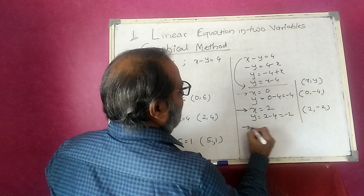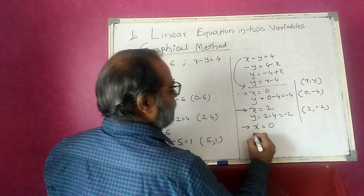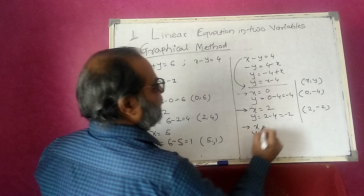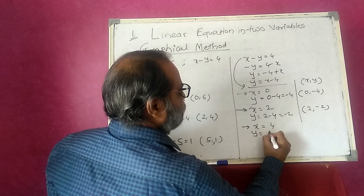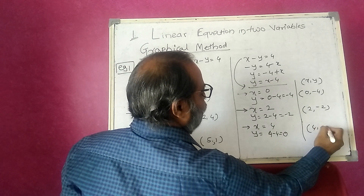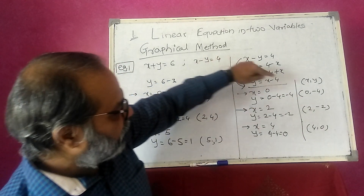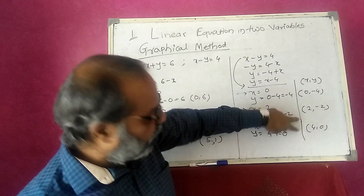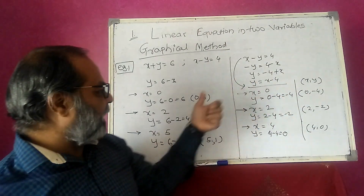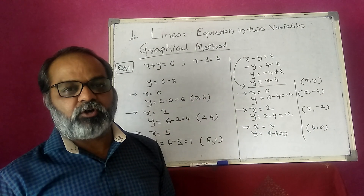I take x is equal to 4. That means y is equal to 4 minus 4, that becomes 0. My coordinate becomes (4, 0). I now have three coordinates for this equation. I plot these three coordinates on a graph to get a straight line. When these two straight lines intersect, that point is the solution of our equations.